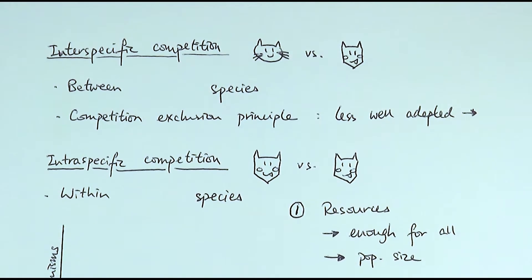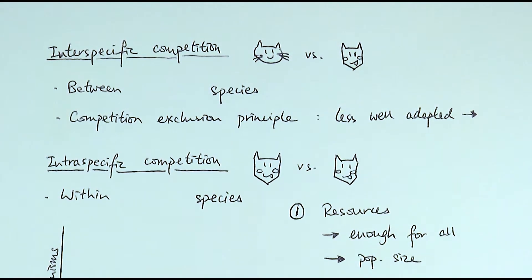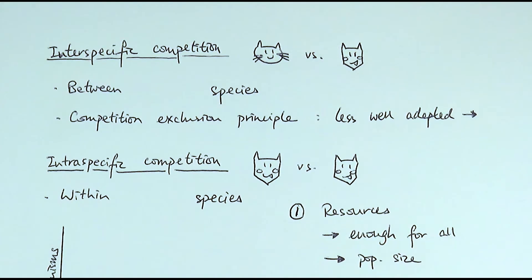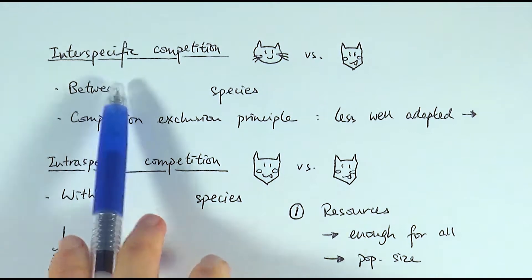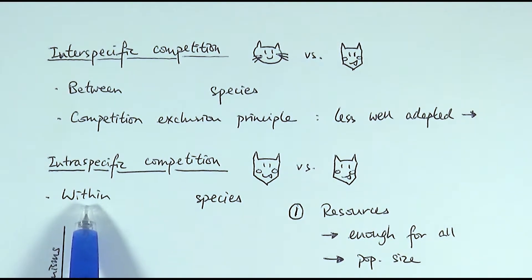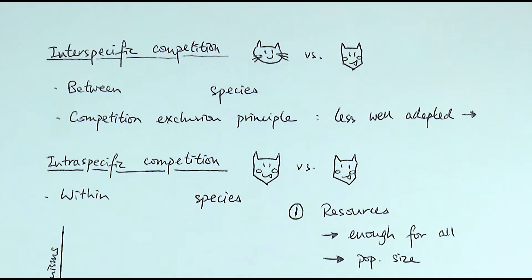In this video we are looking at competition. Competition refers to how different organisms will be competing for or fighting over the same resource, so any changes in the amount of resources available would have an impact on their population size. Competition can be largely split into two types: interspecific competition and intraspecific competition, and it's important to know the difference between the two.